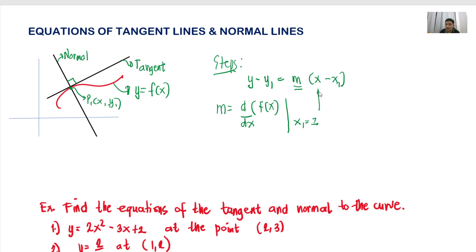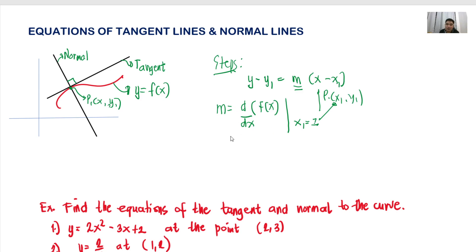At the point of tangency, p1 equals (x sub 1, y sub 1). Substitute the value of x sub 1 — get the derivative of your curve or function first, then substitute the value of x sub 1. You can use your calculator: input it using the derivative function (shift + integral, below alpha if you're using a 570 ES Plus). Input the function and the certain value, and what you get from that first derivative is the slope of the tangent line.